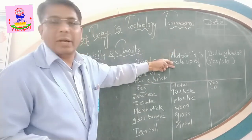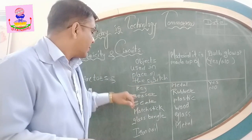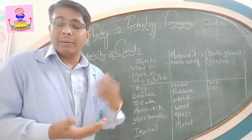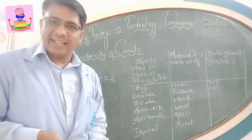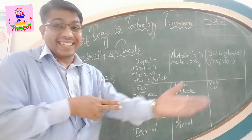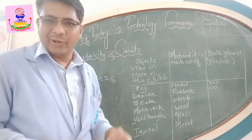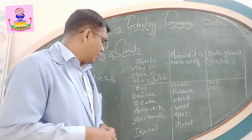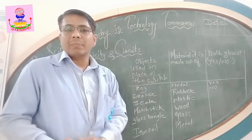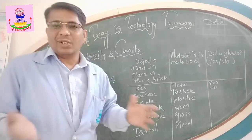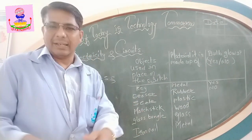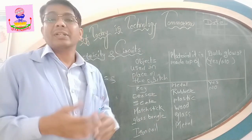The materials we will test include: a key, which is made up of metal; an eraser, made up of rubber; a scale, which can be plastic, wooden, rubber, or steel; glass bangle; and an iron nail, which is also metal. The textbook shows that in the case of the key, the bulb glows, but in the case of the eraser, the bulb does not glow.